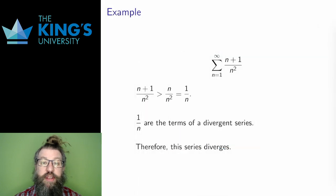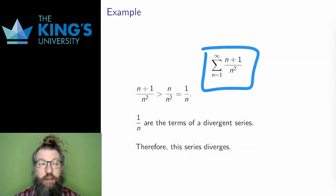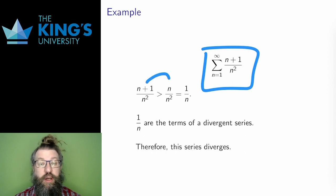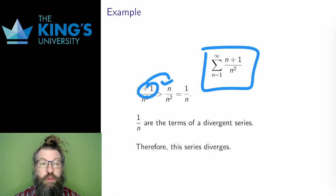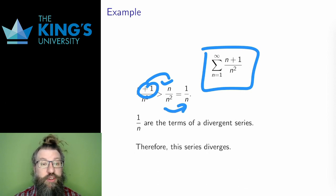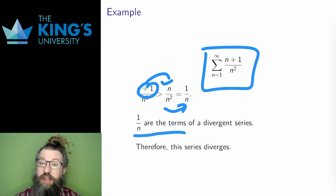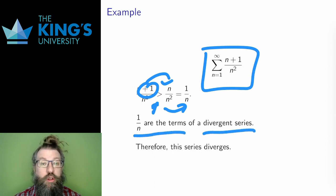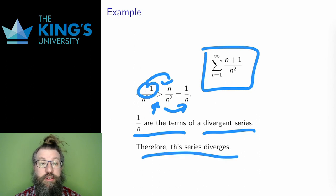Here is yet another example. The term is (n + 1) over n squared. Now (n + 1) over n squared is larger than n over n squared, since adding 1 to the numerator will always produce a larger number. But n over n squared is the same as 1 over n, which is again the terms of the harmonic series, and the harmonic series diverges. So this series has terms which are larger than the terms of a divergent series, so it must diverge.